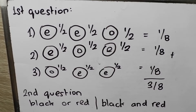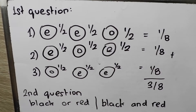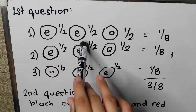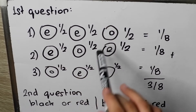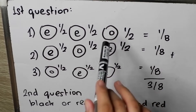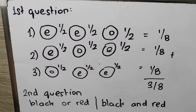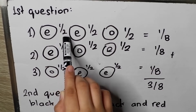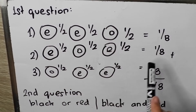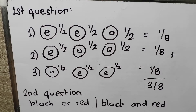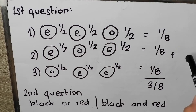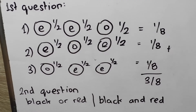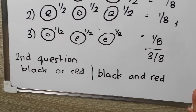There is a 50% chance that each roll will be even, and a 50% chance that a roll will be odd. So we have 3 cases. You multiply 1/2 × 1/2 × 1/2 which equals 1/8. We have 3 cases, so we add 1/8 + 1/8 + 1/8 and we get 3/8.